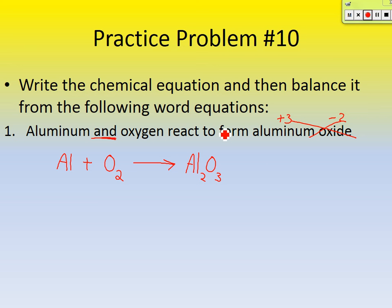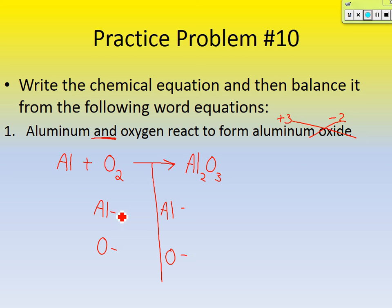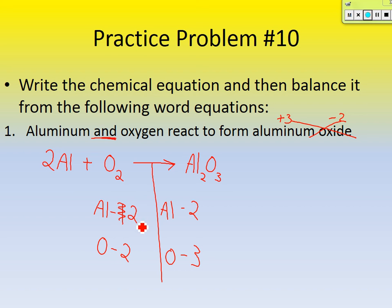Is that equation balanced? No. So let's balance it. Find the arrow, draw the line down, and list elements from left to right: aluminum and oxygen. On the reactant side: 1 aluminum and 2 oxygens. On the product side: 2 aluminums and 3 oxygens. To balance aluminums, I need a coefficient of 2 on the reactant side. That gives me 2 aluminums, but oxygens are still unbalanced.